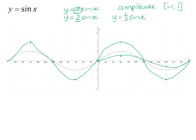The q value does the same thing to the sin graph that it does to any other graph — it shifts the graph vertically. It's going to shift the graph vertically by whatever the value of q is.